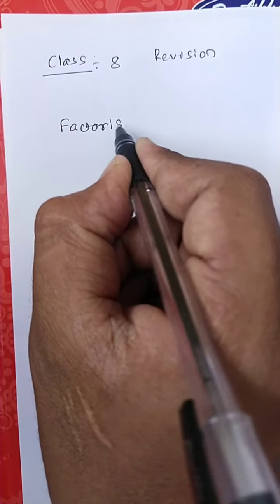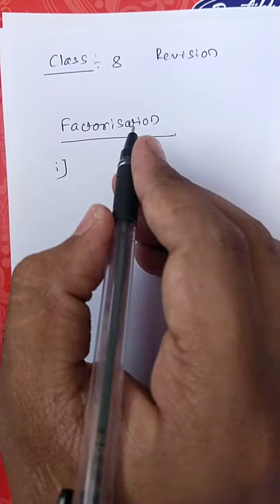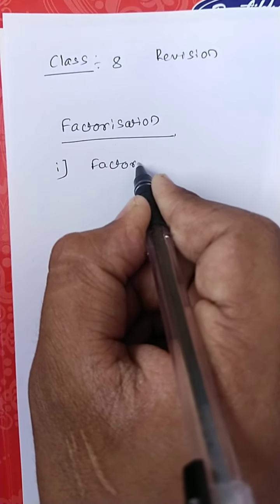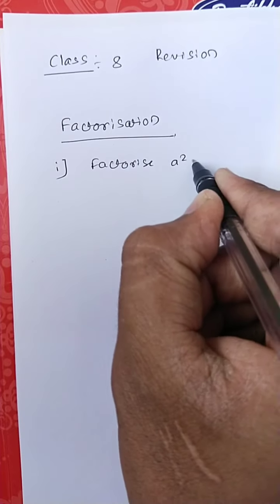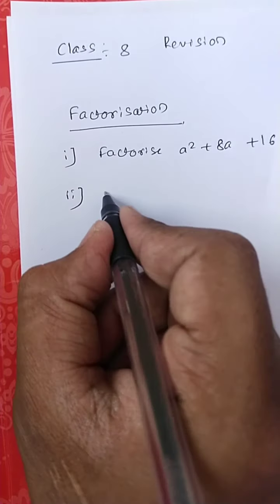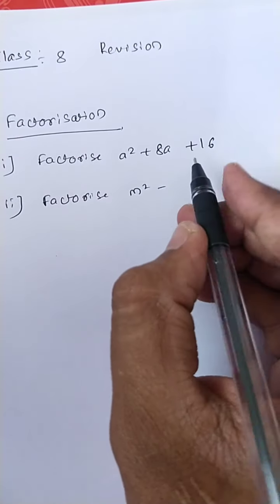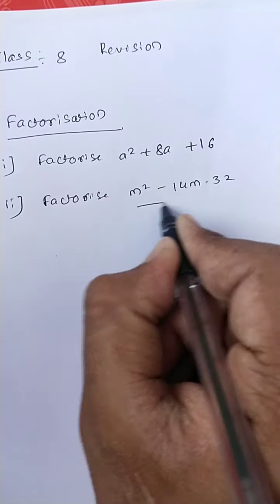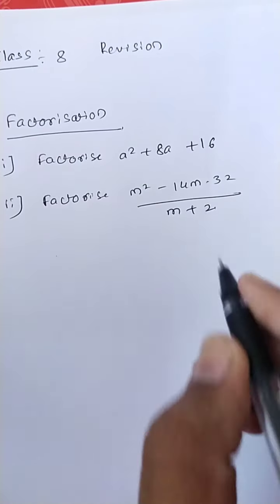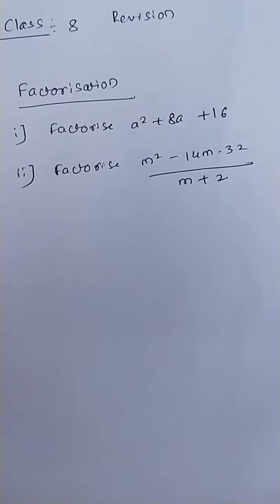I am making the revision of factorization. I am going to discuss two problems. First, factorize a square plus 8a plus 16. Second, factorize m square minus 14m minus 32, whole divided by m plus 2. So I am going to solve these two examples.